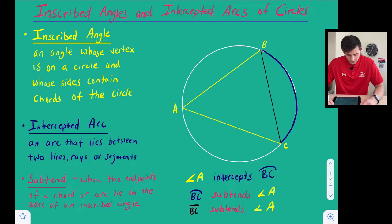So in yellow we have inscribed angle and it says that an angle whose vertex is on a circle and whose sides contain chords of the circle. So I've got that in yellow so if we look over here at the circle on the right side of our screen we see our inscribed angle here in yellow.